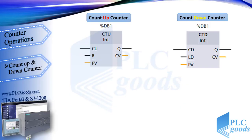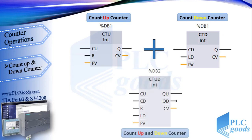When we combine these counters, we get the count up and down counter. As you can see, this counter has all the inputs and outputs of the individual counters.